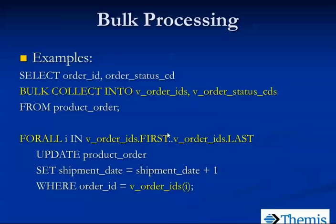By reducing context switches, your code runs significantly faster. Inside a FORALL, the only DML operations you can include are UPDATE, INSERT, DELETE, and MERGE — you cannot put an IF or CASE statement inside a FORALL because it's all one statement. The performance gains from bulk processing can be dramatic.